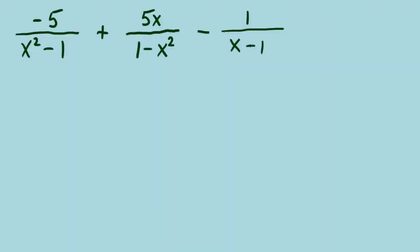Let's do another example. We're increasing the difficulty, but we're getting close to covering all the ins and outs of these kinds of problems. So let's start — what do we see? Three fractions, and our operations are addition and subtraction. That means we need a common denominator. Let's find that LCD.